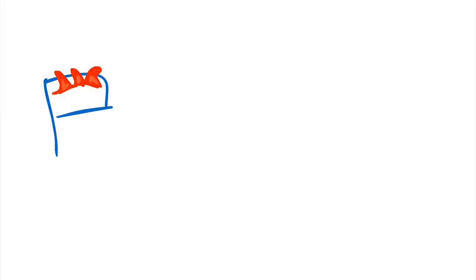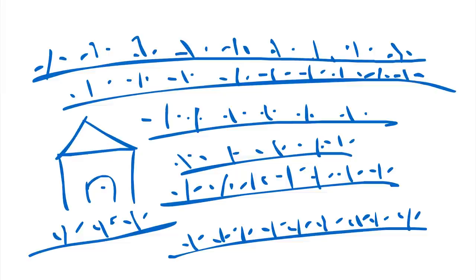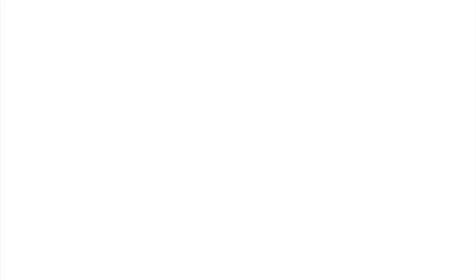Constable portrayed a stable world with neither political turmoil or industrial development challenging the power of the church or landowners. Like most Romantic painters, Constable regarded rural lifestyle as more suitable than a cluttered urban industrial life.